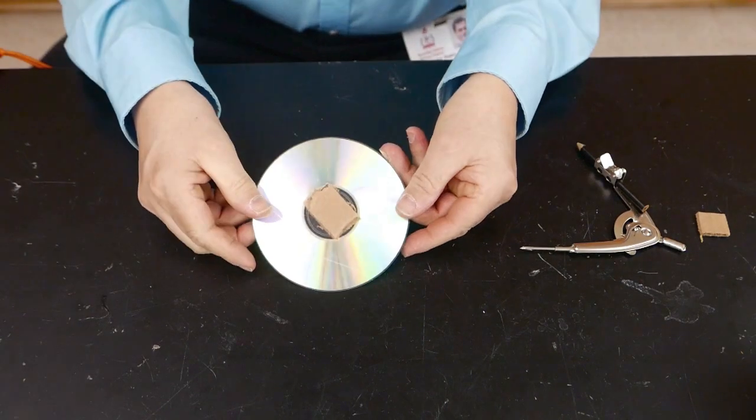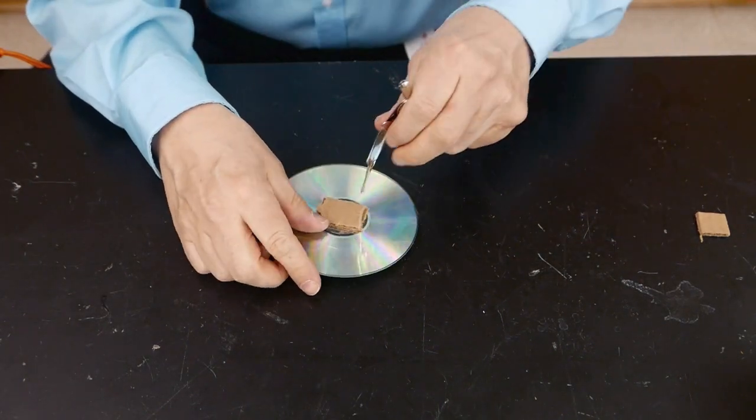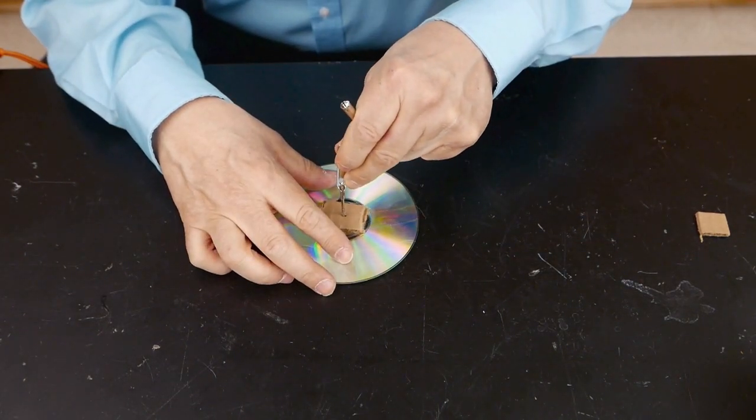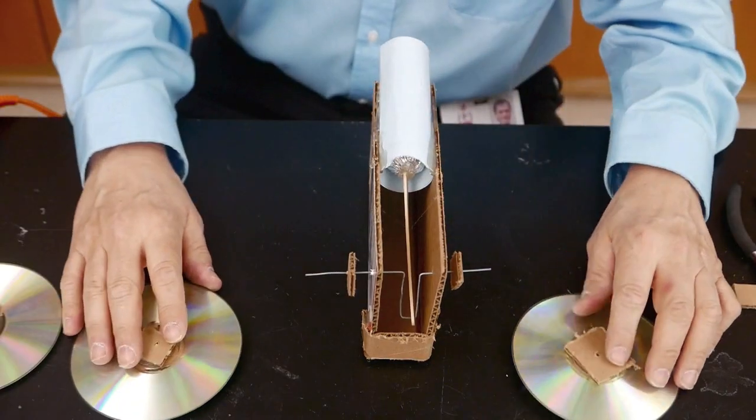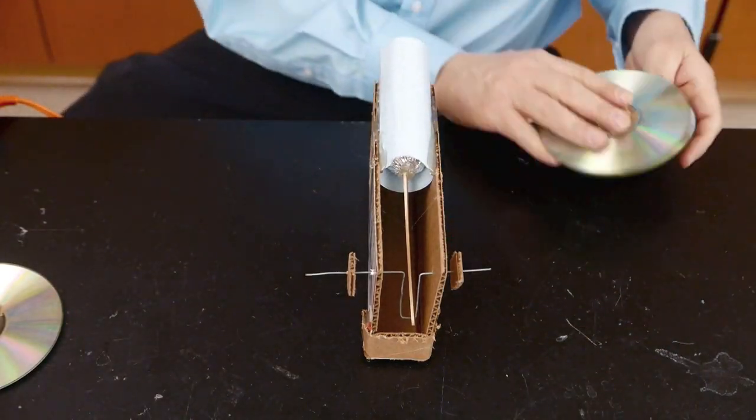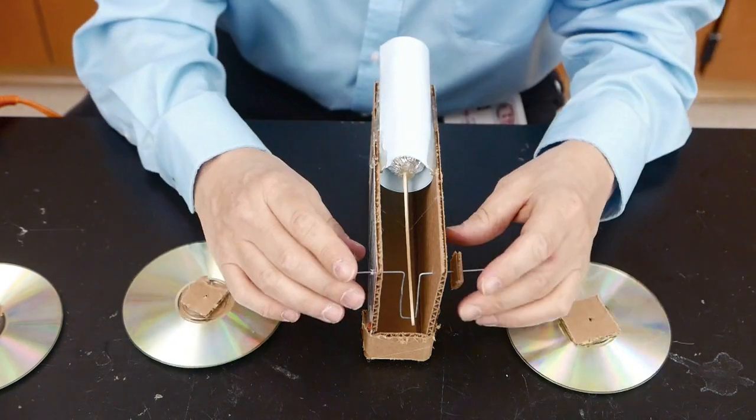My flywheels are CDs that have cardboard glued to either side. And I'm simply going to use something to poke a small hole through the center of the CDs. I'm going to start with two small pieces of cardboard in between the base and the CDs. That's going to keep them from rubbing.